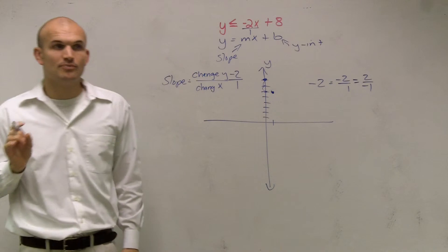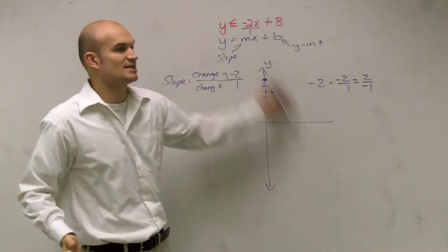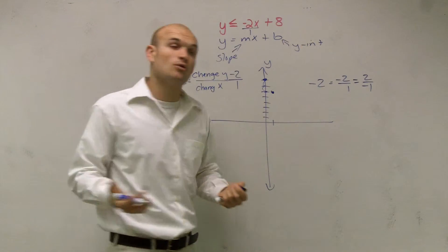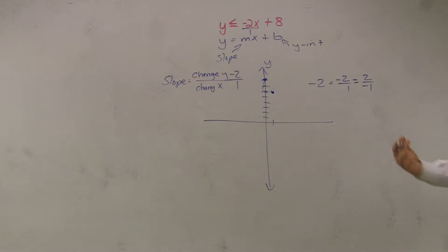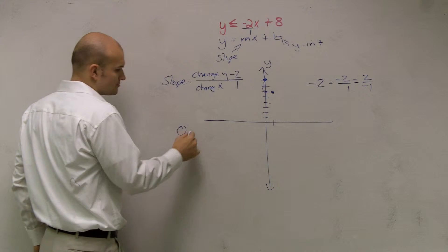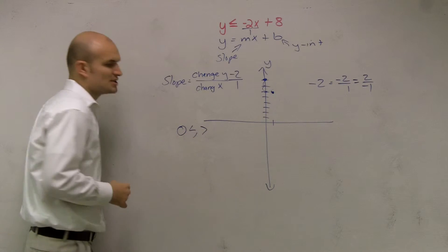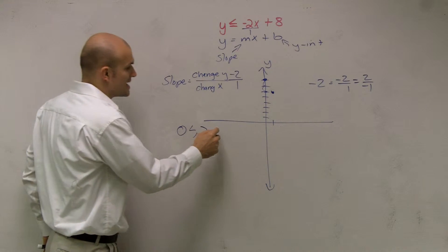Now, before you connect your points, we have a linear inequality. Usually a linear equation we would just connect and be done, but a linear inequality is a little bit different. For a linear inequality, we have to determine if it's a solid or a dashed line. Remember, open circles was when it was less than or greater than. Now we don't have open circles, we have dashed symbols.